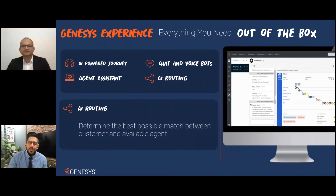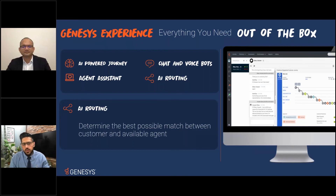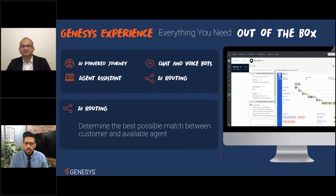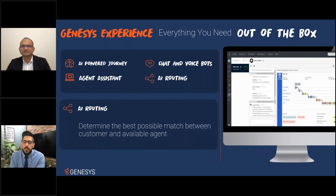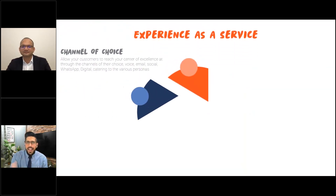AI Routing ensures that when Hiba is ready to talk to an agent — through voice or any other channel — she's transferred to the best available agent. This is achieved by understanding the customer's history, real-time data such as how long they spent on the IVR or queue, options selected on the chatbot, and agent-side statistics like first-call resolution rate and even demographic factors. Genesys ensures the interaction is always routed to the best agent available.